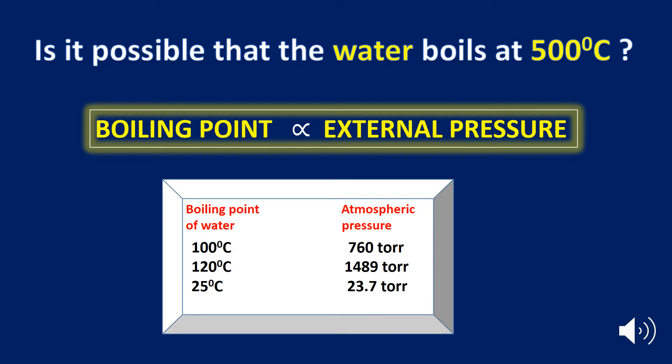Let's take an example. As you can see here, the boiling point of water is 25 degree Celsius at an atmospheric pressure of 23.7 torr.